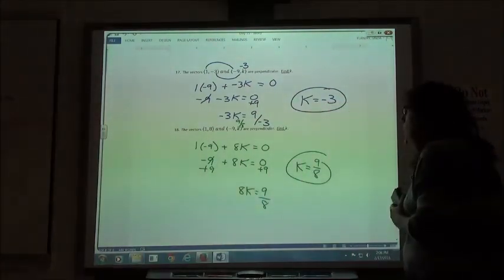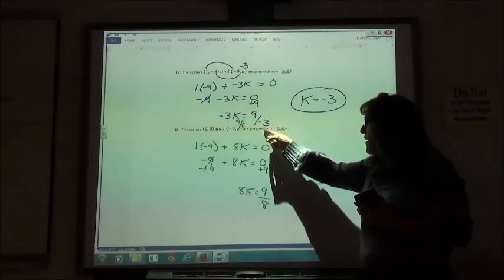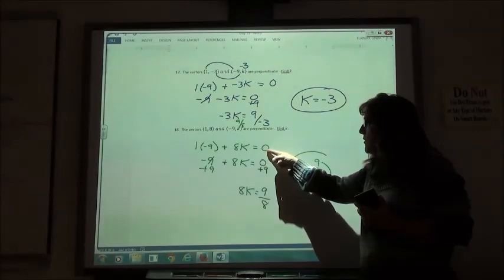So simply using our dot product, if they are perpendicular, it should be equal to 0, solving it for my missing variable.